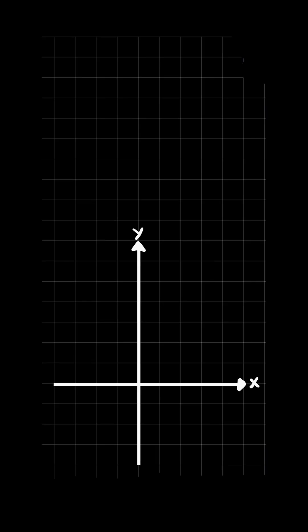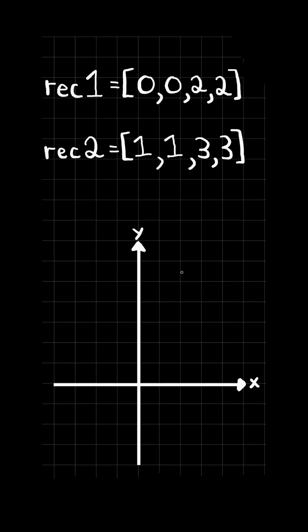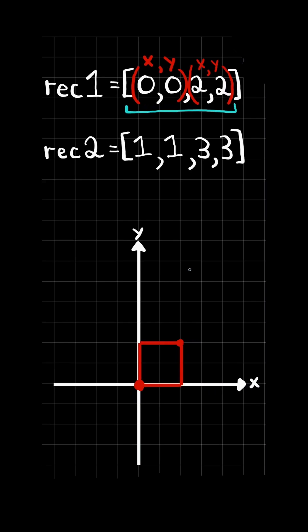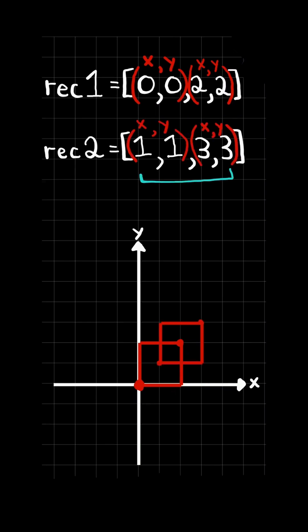Rectangle overlap. Consider the xy axes. We are given two rectangles. For the first rectangle, the first two elements represent the xy coordinates of the bottom left corner, and the next two elements represent the xy coordinates of the top right corner. With these two coordinates we can draw the rectangle, and we can do a similar process with the second rectangle to draw it as well.